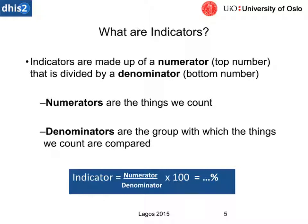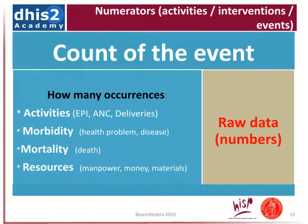The numerators are the things that we count — they're at the top of the mathematical function — and the denominators are at the bottom, which is what we're comparing it to. We could compare number of visits over time or any other number of things, and if we want to get a percentage we multiply by 100. The numerator looks at how many occurrences: activities, morbidity, mortality, resources, raw data. A lot of the time in numerators we're looking at a very specific data element.